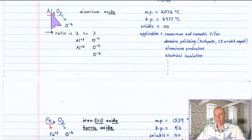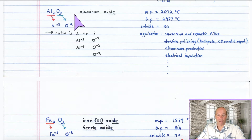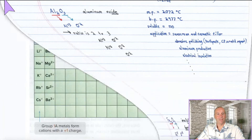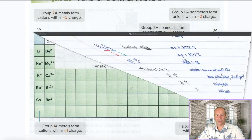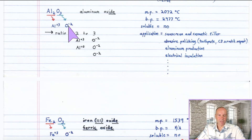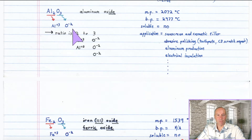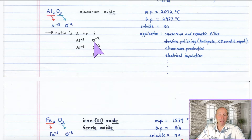Our next example is Al₂O₃. Al is aluminum and O is oxygen, so the name is aluminum oxide. Aluminum is in the plus three column and oxygen is in the minus two column. To get it to balance, you bring the two down — you need two aluminums — and bring the three down — you need three oxides. Two aluminums gives a total of plus six and three oxides gives a total of minus six. So the formula Al₂O₃ is a balanced structure.